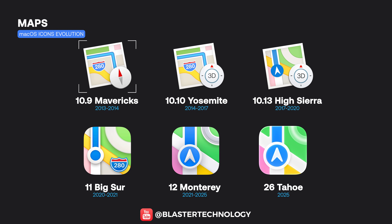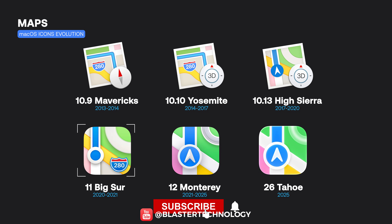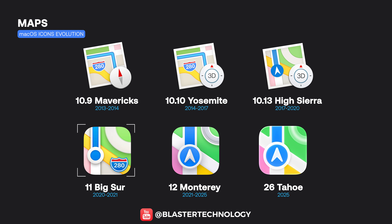The Maps icon represented a realistic map with a compass during the Mavericks era, but with macOS High Sierra, Apple updated the icon to display the location of its new headquarters, Apple Park. Big Sur introduced a much cleaner and more abstract symbol, which has been consistently refined up to the present.